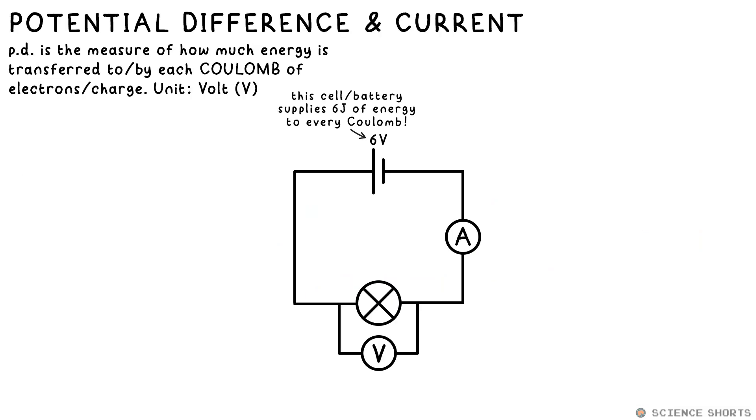Potential difference, PD for short also known as voltage, tells us how much energy is transferred per coulomb of these electrons or coulomb of charge. So if you have a one volt cell or battery, that just means that one joule of energy is given to every coulomb of charge, every coulomb of electrons that pass through it.